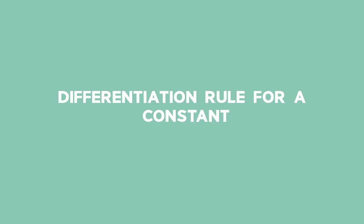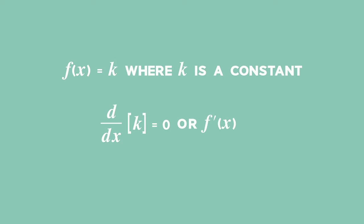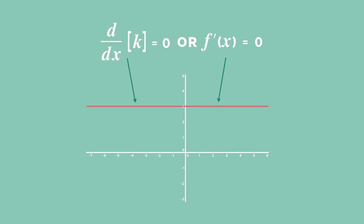The Differentiation Rule for a Constant is derived from the power rule. For f of x equal to k, where k is a constant, the derivative of k with respect to x is 0. The derivative is the slope of a function at any given point, and the slope of a constant function is always 0.